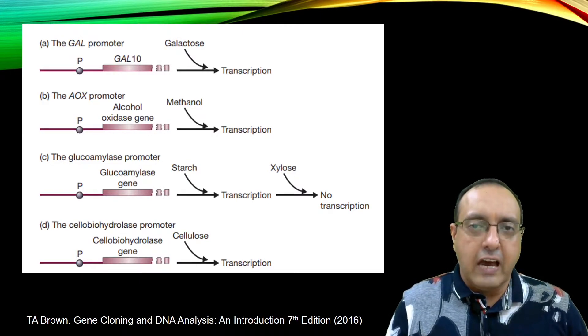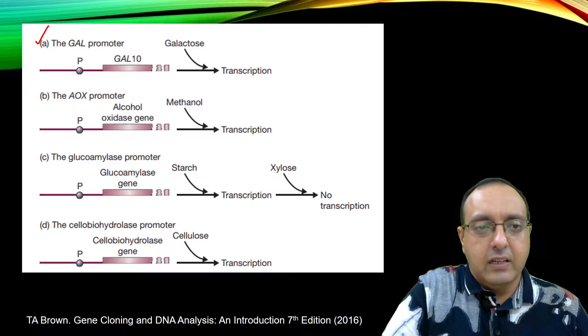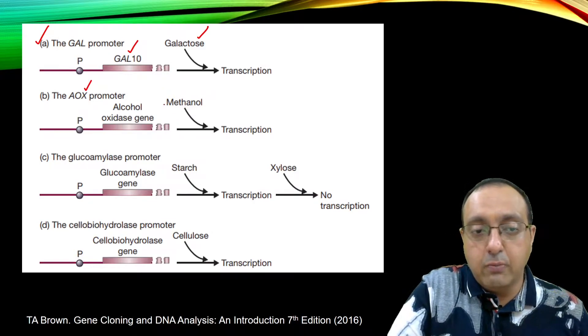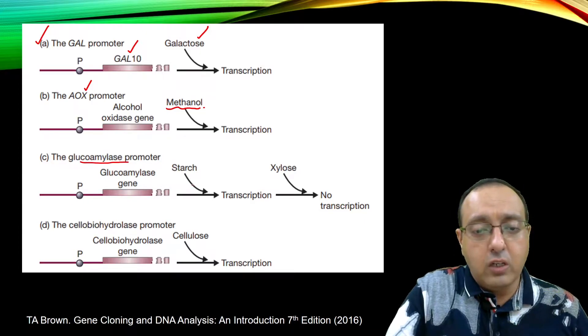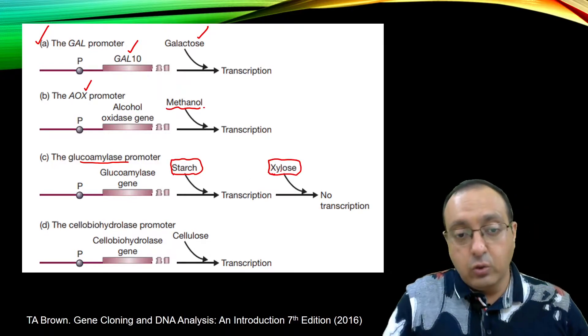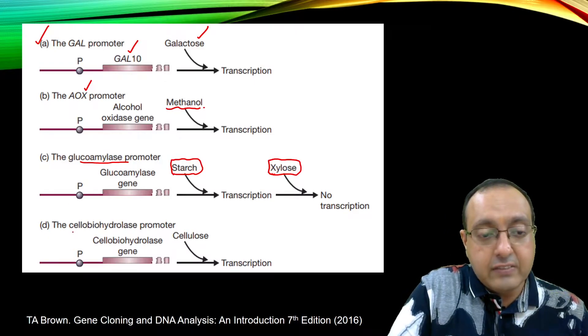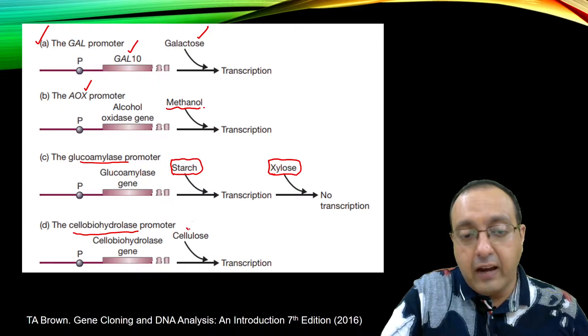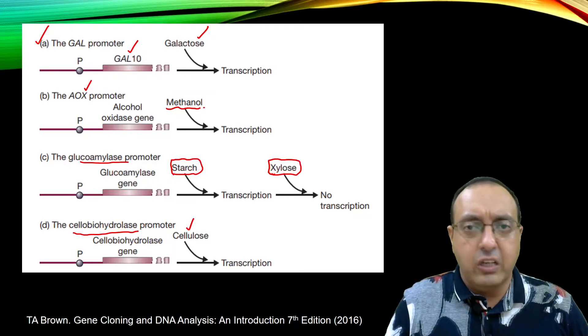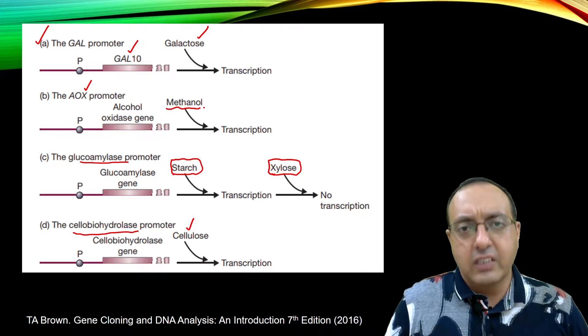So here are some of the promoters that we have for expressing recombinant proteins in yeast. We have the galactose promoter from the galactose metabolism. It is the GAL10 promoter. It can be induced by galactose, alcohol oxidase promoter. It can be induced by methanol, glucoamylase promoter, which can be induced by starch and repressed by adding xylose. So it is an inducible as well as a repressible promoter, very useful if you want to have flexibility of expression. And finally, we have cellobiohydrolase promoter, and this can be turned on by adding some cellulose into the medium. So these are some choices of promoters that we have. The list is growing day by day, so you can keep up with the literature about what are the different systems used by pharmaceutical companies as well as biotechnological labs.